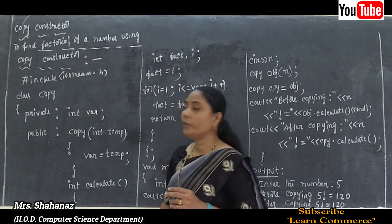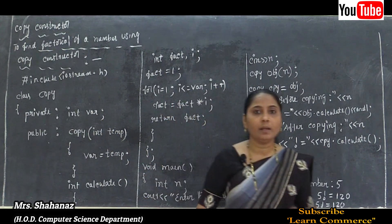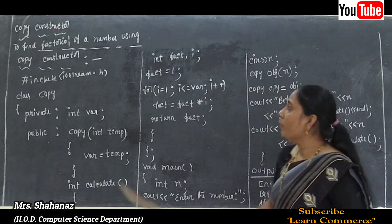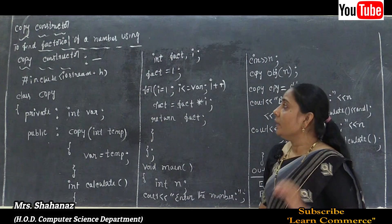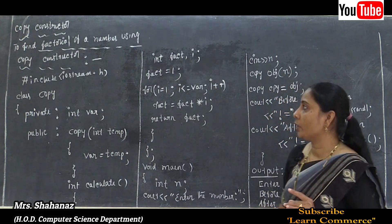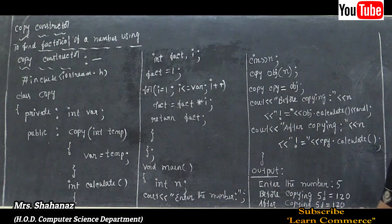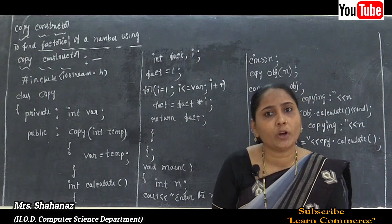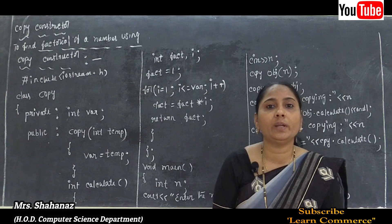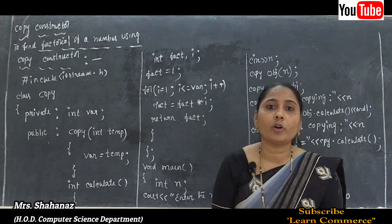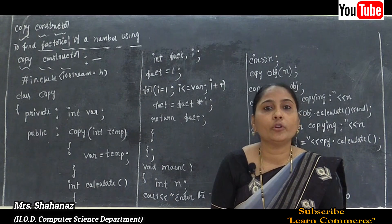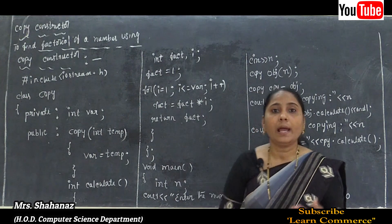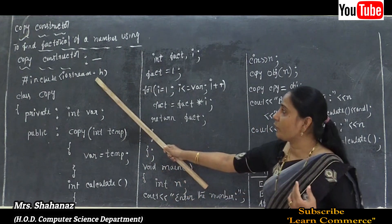First of all, we start with the header files. The first header file is #include iostream.h. If you want to use endl, include iomanip.h. For setw, also use iomanip.h. For clrscr, use conio.h. Depending on the functions you use, include the appropriate header files. iostream.h is for inputting and outputting values on the monitor.